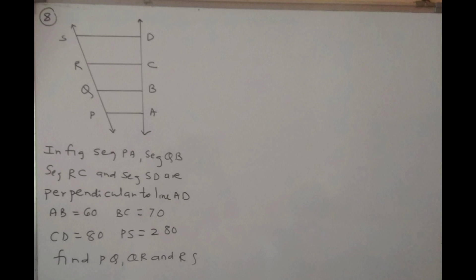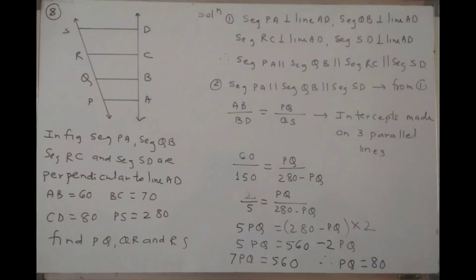Next question, question number 8. In the figure, segment PA, segment QB, segment RC, and segment SD are perpendicular to line AD. AB is 60, BC is 70, CD is 80, and PS is equal to 280. You are asked to find PQ, QR, and RS. All the segments are perpendicular to the same line, so they are definitely parallel to each other. We are going to use the intercept theorem on 3 parallel lines. Segment PA is parallel to segment QB, parallel to segment RC, parallel to segment SD. Reason: if two or more lines are perpendicular to the same line, those lines are parallel to each other.